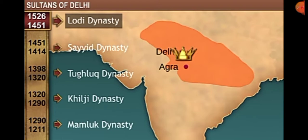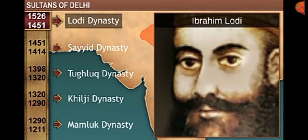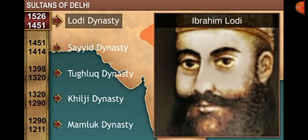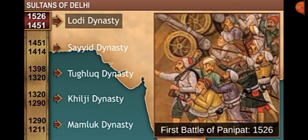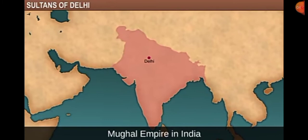Bahlul Lodi established the Lodi dynasty in 1451. After his death, his son Sikandar Lodi took over Delhi and shifted his capital to Agra. He was succeeded by Ibrahim Lodi in 1517, but Ibrahim was unable to gain the support of other Khan nobles. Finally, Daulat Khan Lodi, the governor of Punjab, and Ibrahim's uncle, invited Babur to invade India. In 1526, Babur defeated Ibrahim Lodi in the First Battle of Panipat and founded the Mughal Empire in India, ending the Lodi dynasty.